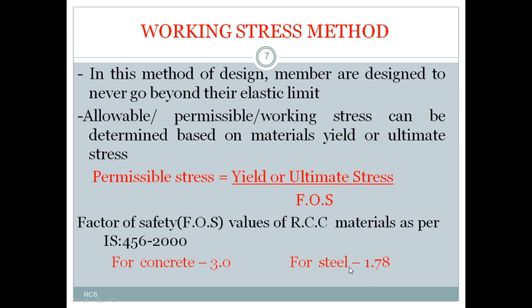Steel, on the other hand, has a lower factor of safety of 1.78 compared to concrete. Steel is a factory product — it is manufactured under a controlled environment with good quality control. Therefore, there are minimal deviations in material or supervision. That is why the factor of safety for steel is 1.78, though we still use it to account for any future uncertainties when steel is used in RC members.